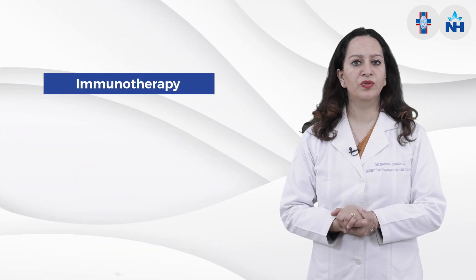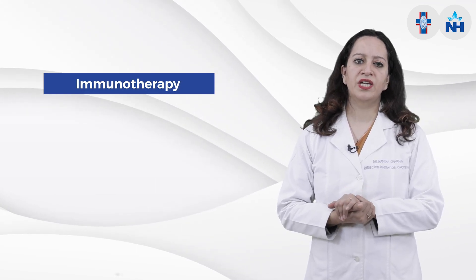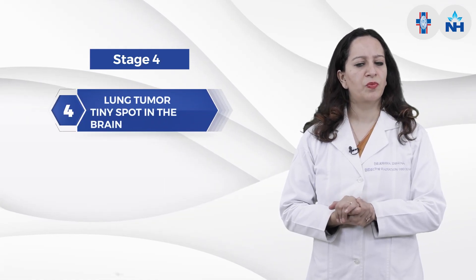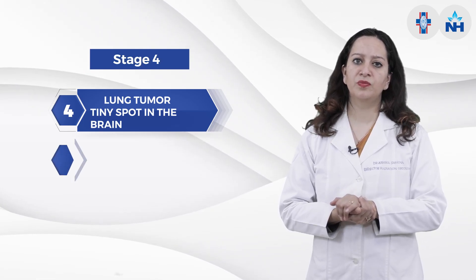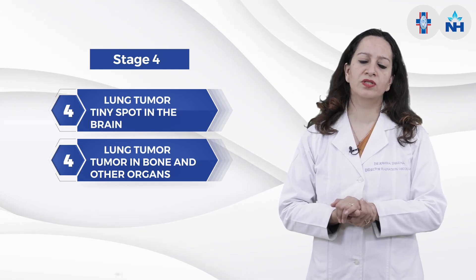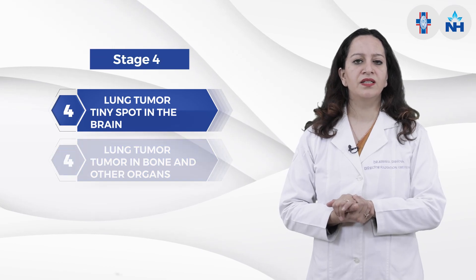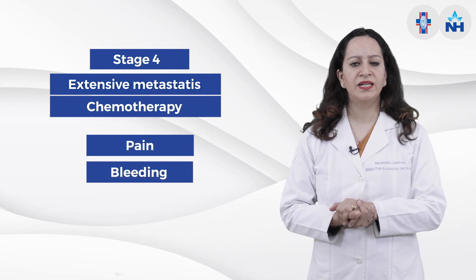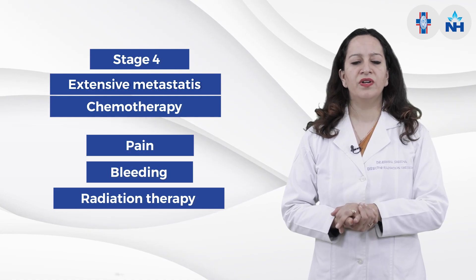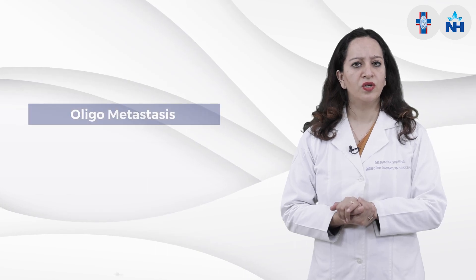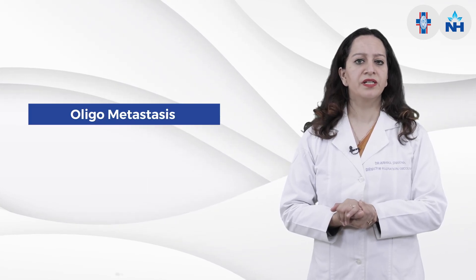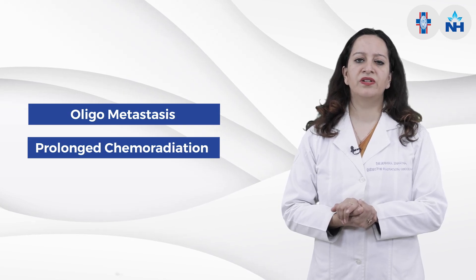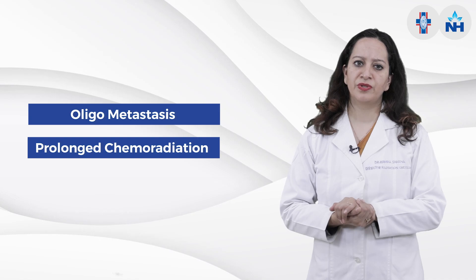After six weeks of chemo-radiation, some patients become eligible for immunotherapy. Stage four is a broad spectrum — it could be a lung tumor with a tiny brain spot, or a tumor alongside disease in bones, liver, and multiple organs. For extensive metastasis, chemotherapy is the mainstay, with radiation sometimes added for pain or bleeding. For limited metastasis — called oligometastasis — the treatment approach is curative: prolonged chemo-radiation plus local treatment of the metastatic site.